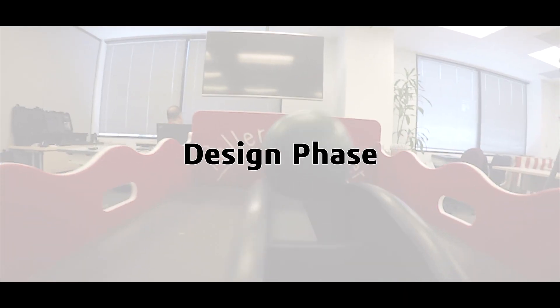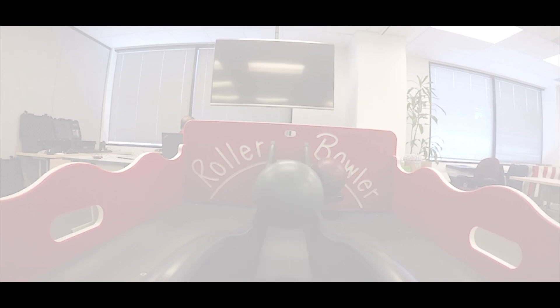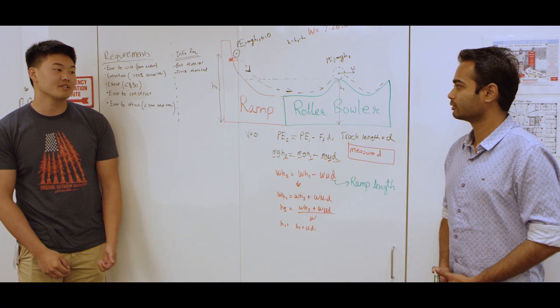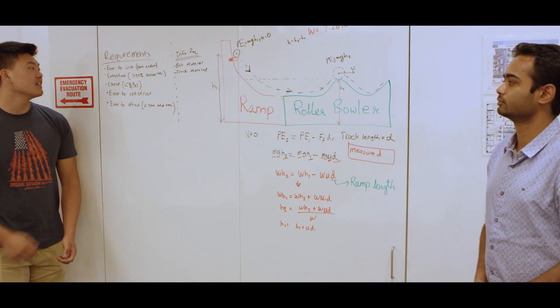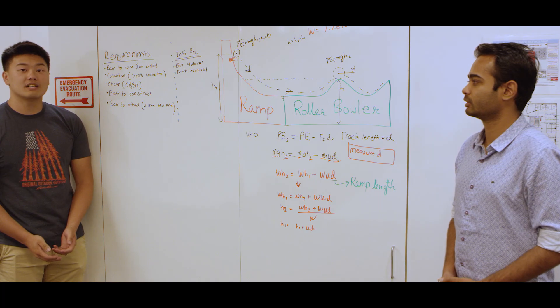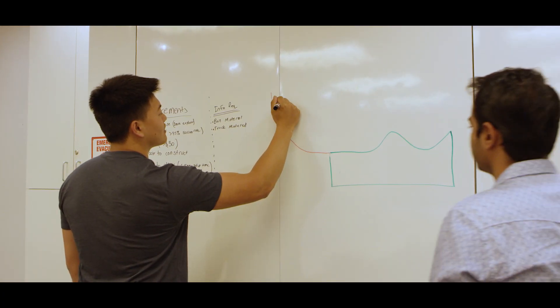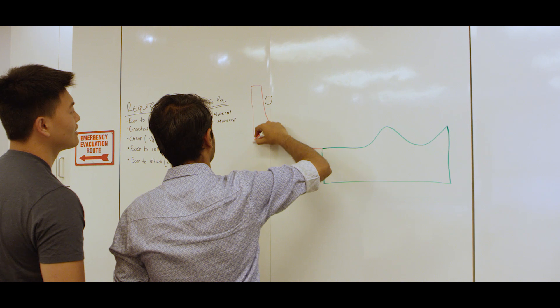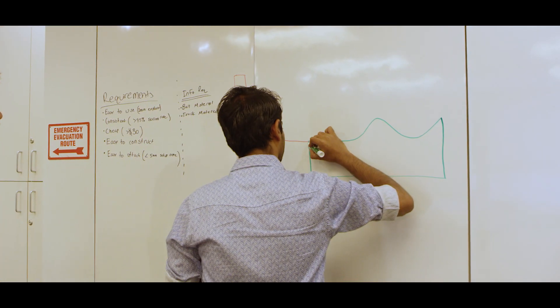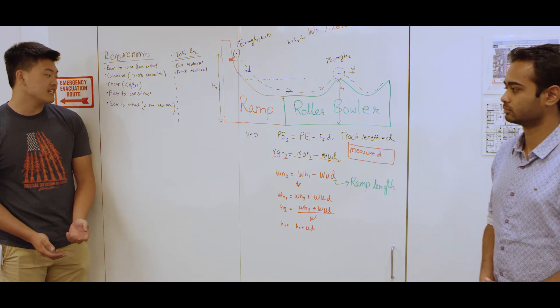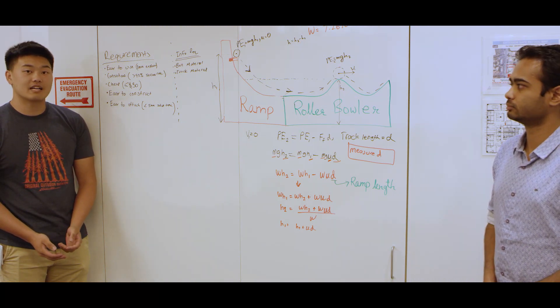When the timer starts, you'll have an hour to begin designing your solution to the problem. Before we started to create our design, we came up with a list of requirements that we needed to fulfill. It needed to be easy to use — less than one minute to explain to someone how to use it — and consistent, with greater than 95% success rate. Cost has to be achieved at less than $30, easy to construct, and easy to attach with a five-minute or less setup time.